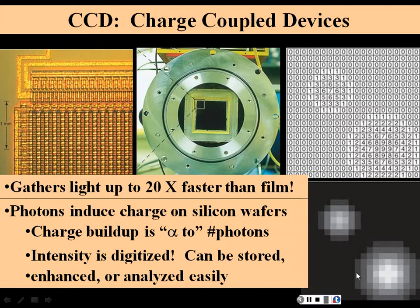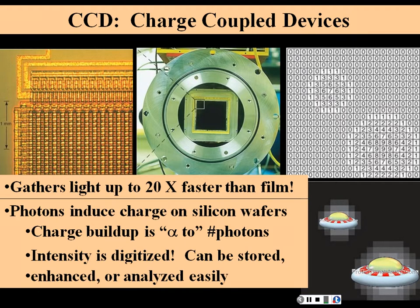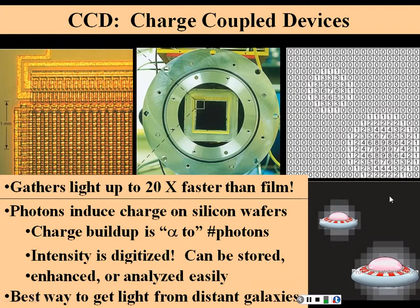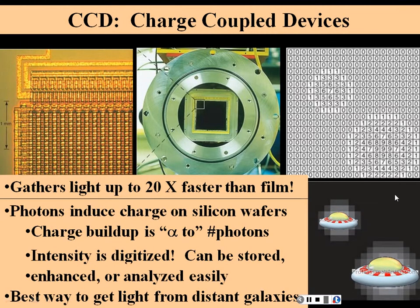CCDs allow us to identify resolution of two objects and further analyze them. This is the best way to get light from distant galaxies, since you only have so many photons from a distant galaxy. You want to take advantage of every photon you can to get a good image, making CCDs a better option than film.